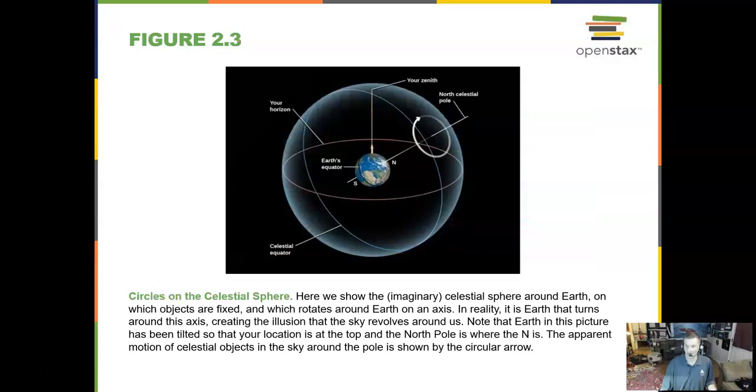And just like on the Earth, we have a north and south pole and an equator, we have the same thing in the sky. So we have the north celestial pole, which is a point straight out from the north pole on the Earth hitting that imaginary celestial sphere. And we also have the celestial equator, which is a line from the Earth's equator to that imaginary sphere in the sky.